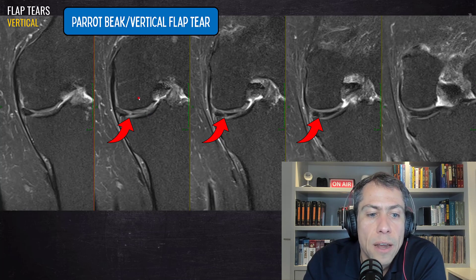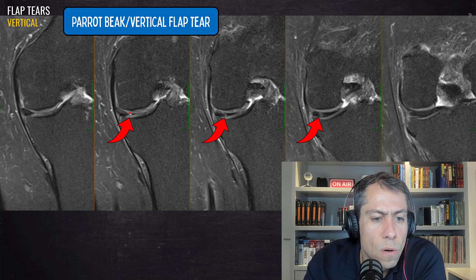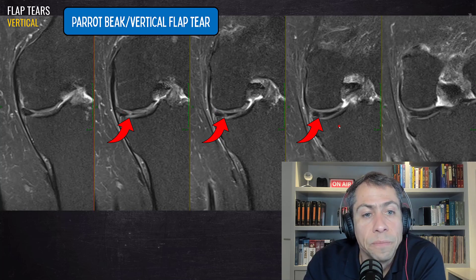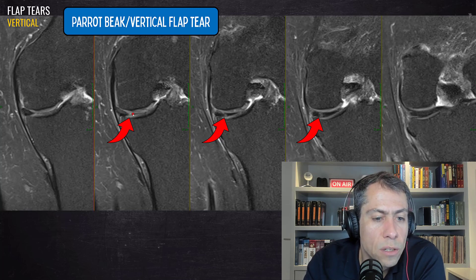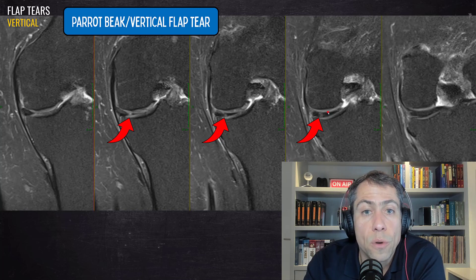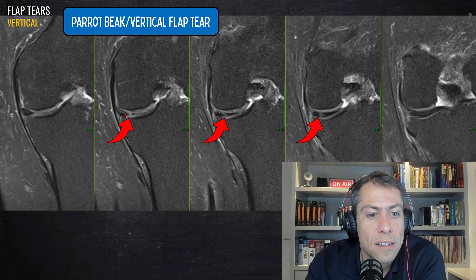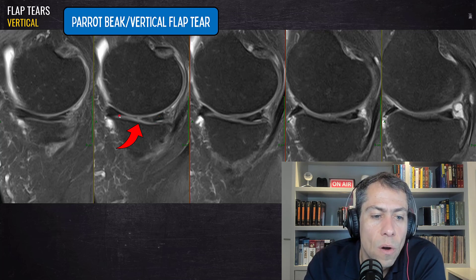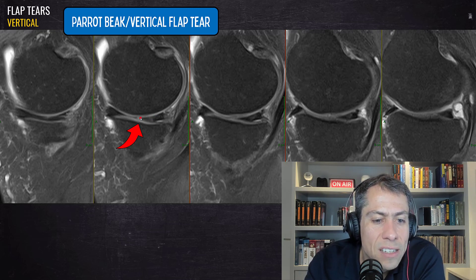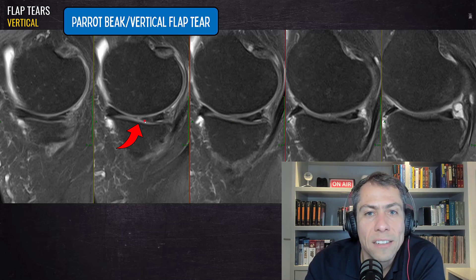Here is our first example — a parrot beak or vertical flap tear at the meniscal body, the middle meniscus. We can see the cleft sign here, here, and here — a marching cleft sign. The tear is located between the meniscal body and the transition with the posterior horn. On the long axis of the lesion in the sagittal plane, the meniscus is blurred in this region and irregular at the inner portion.